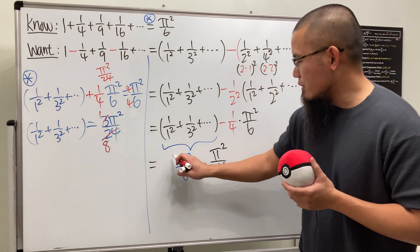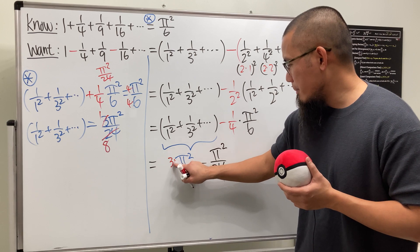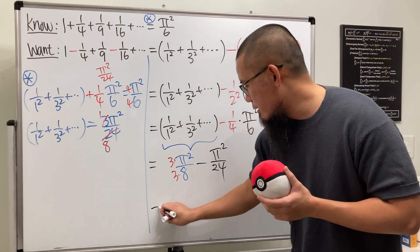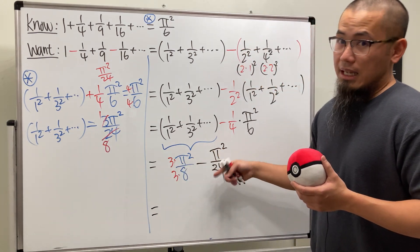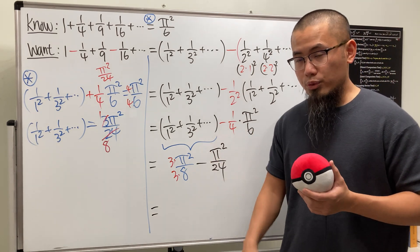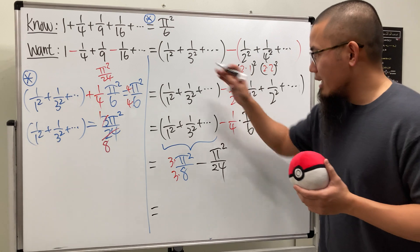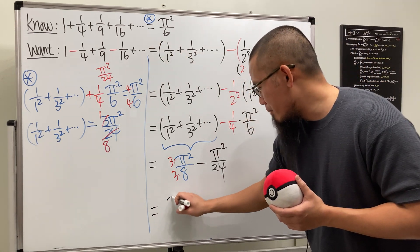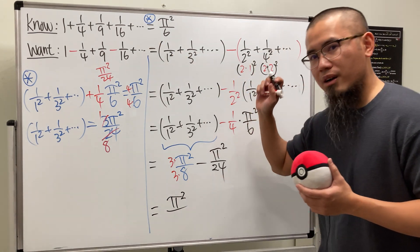Yeah, and then of course, we can finish this, multiply by 3, multiply by 3, and get the common denominator. This minus that is 2 pi squared over 24. Reduce all the 2. So ladies and gentlemen, all that becomes pi squared over 12.